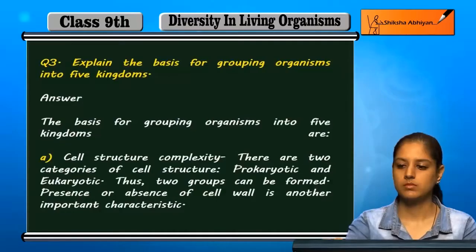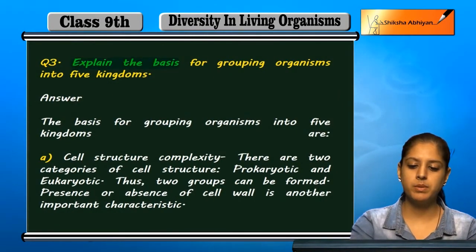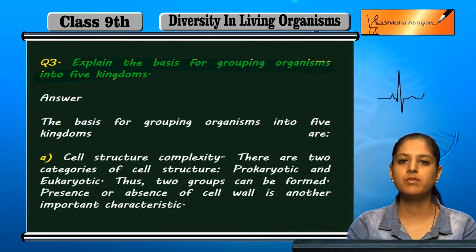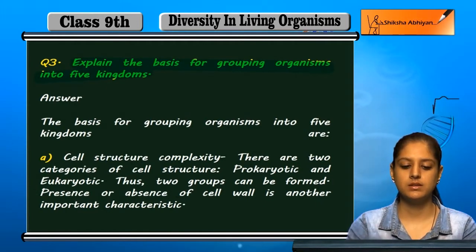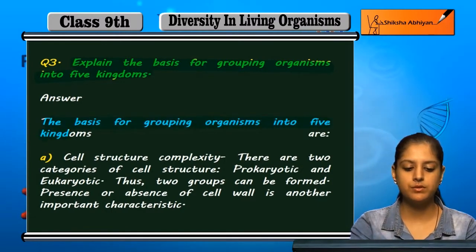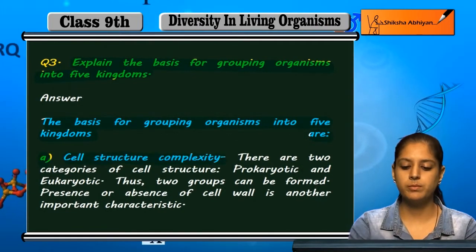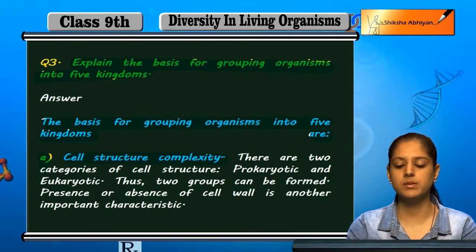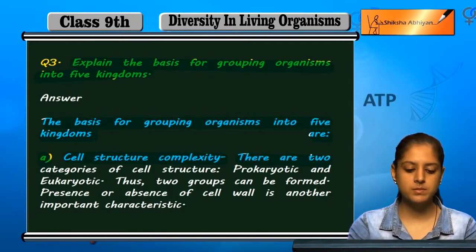Question number three: explain the basis for grouping organisms into five kingdoms. The first basis for grouping organisms into five kingdoms is cell structure complexity. In this basis, we look at what type of cell structure the organism has.